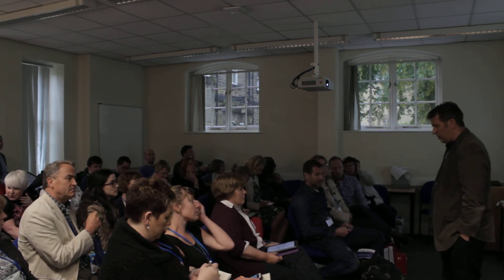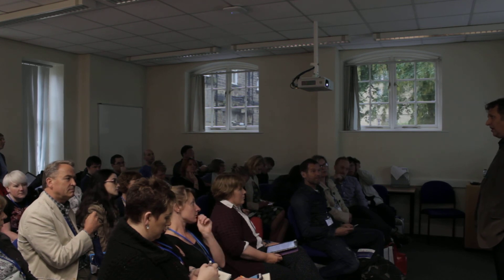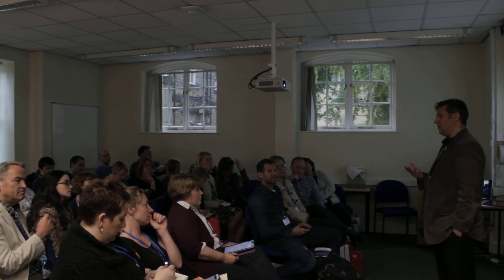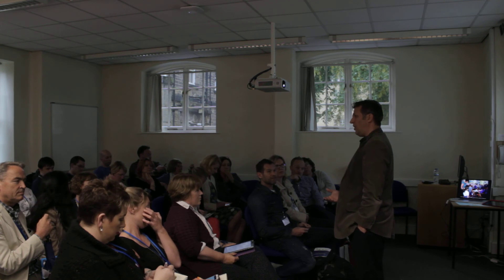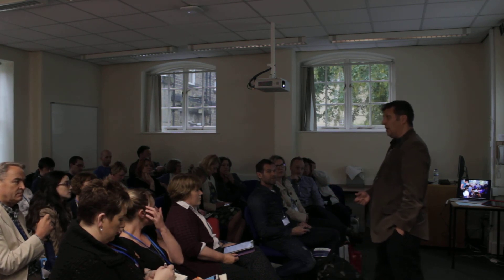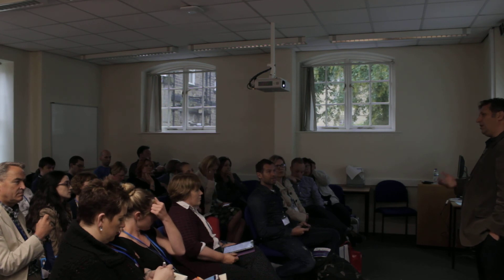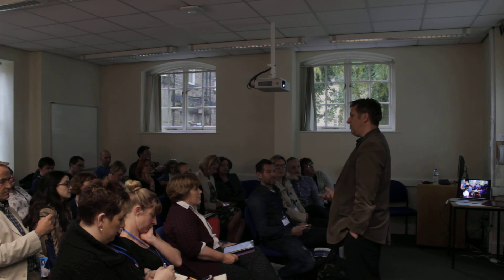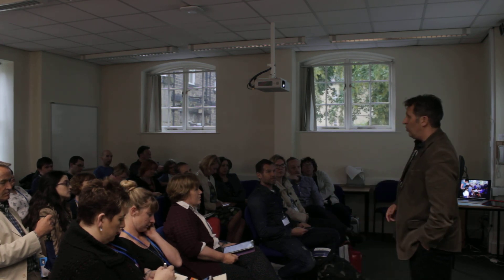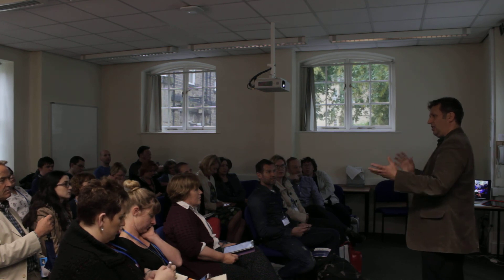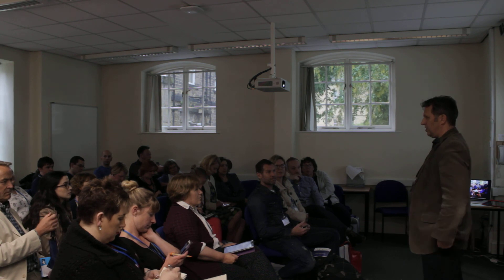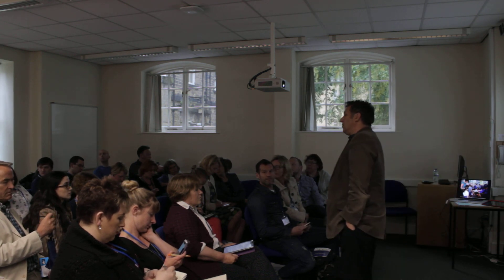Bruner talks about this in terms of three forms of representation: the iconic, symbolic, and enactive. The enactive form — being the form that we use with our bodies when we actually step into something — is an important way that we represent the world, an important way we make meaning. In early years, children learn predominantly through enacting, being involved. And as children get older, that becomes less and less a part of their learning. It seems to me it does work with all ages.